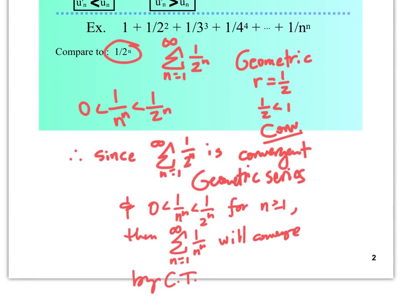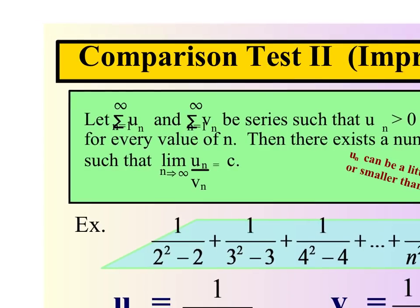The part about this test that isn't always pleasant is finding something to compare a series to. Sometimes there are ambiguous cases where it's not very clear what to compare to — that's when we get to our next test, which is called the limit comparison test.